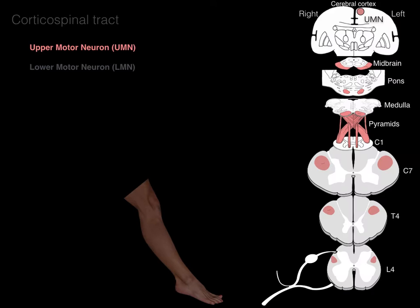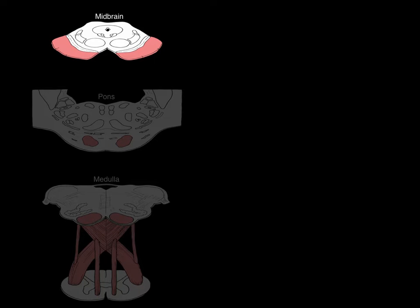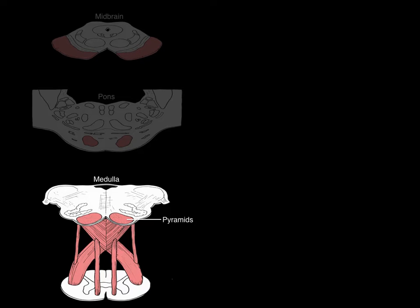This upper motor neuron cell body sends its axon down through the internal capsule, then through the midbrain, down through the pons, and down through the medulla. That's the corticospinal tract through the brainstem. In the midbrain, there are the cerebral peduncles, where the corticospinal tract — the upper motor neurons — descend. Then into the pons proper, and in the medulla into the pyramids.